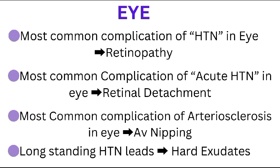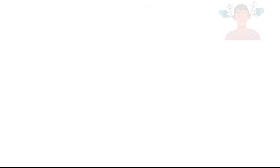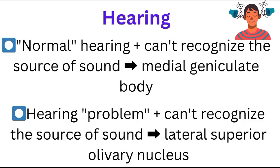The most common complication of hypertension in the eye is retinopathy, while the most common complication of acute hypertension in the eye is retinal detachment. The most common complication of arteriosclerosis in the eye is AV nipping, while long-standing hypertension leads to the formation of hard exudates in the eye.